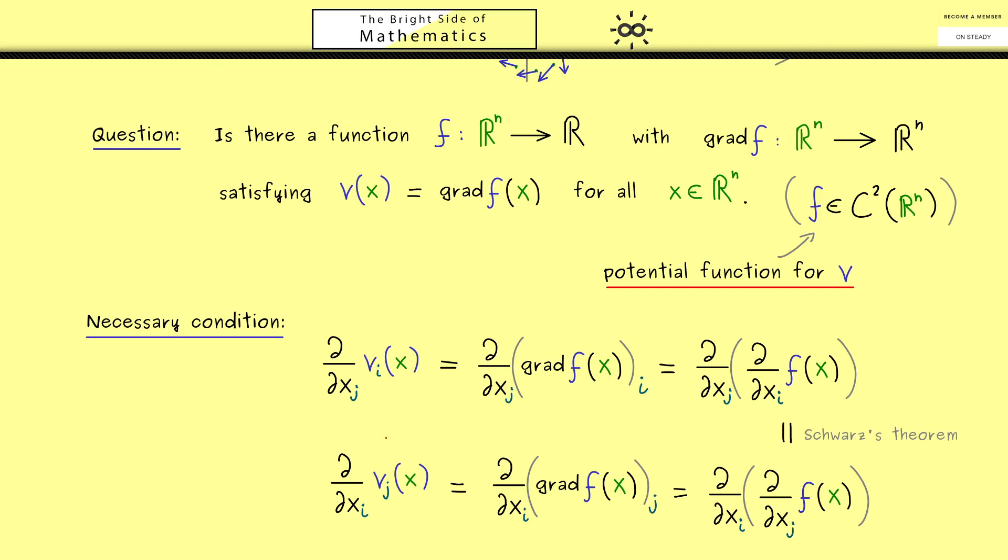And here we see, we have shown that this is the necessary condition. Both partial derivatives have to be the same. So obviously, for all i, j and for all x. So this is the condition you can remember. It's necessary for the existence of such a potential function.